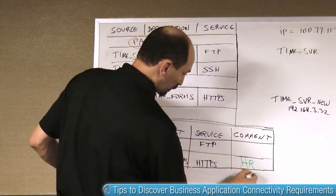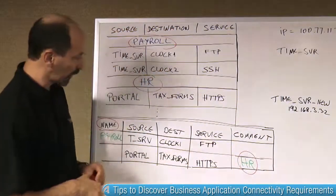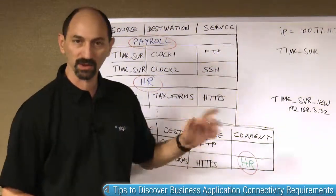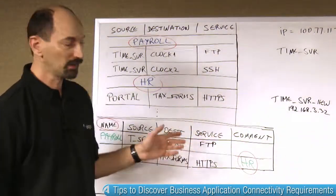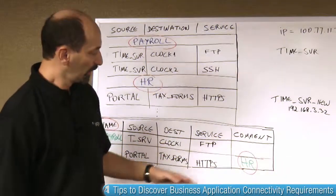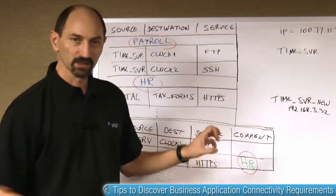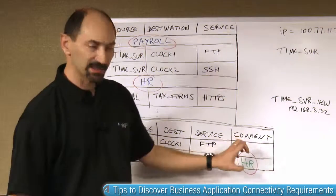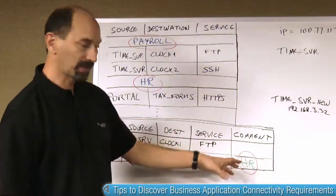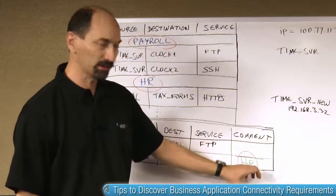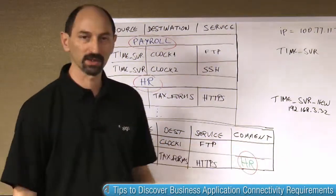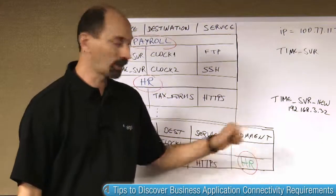You could also have a process whereby you place the application names in the comments. Pretty much every firewall out there has comments, remarks, or description columns. And if you are diligent about using the same name or word to describe the applications, you could place that in the comment fields and find all the rules that have a particular name in the comment field.